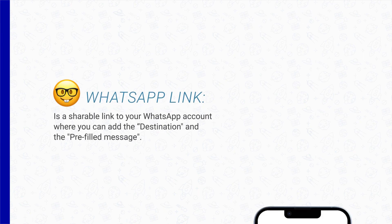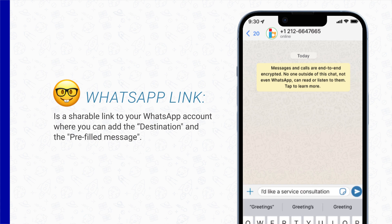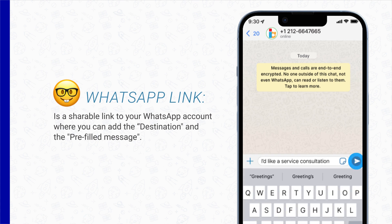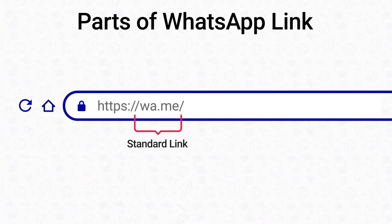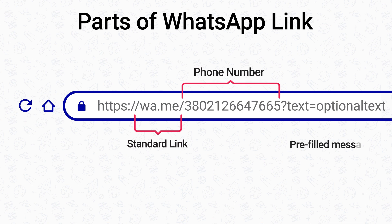Before we get into LinkedIn lead capture, let's define the WhatsApp link first. The WhatsApp link is a shareable link to your WhatsApp account where you can add the destination and the pre-filled message. A WhatsApp link consists of three different parts: standard link, phone number, and pre-filled message.